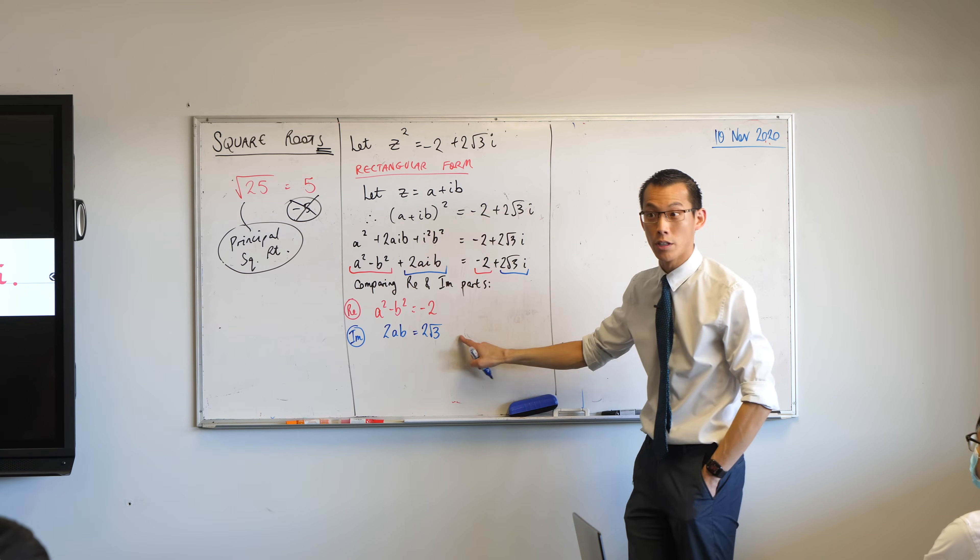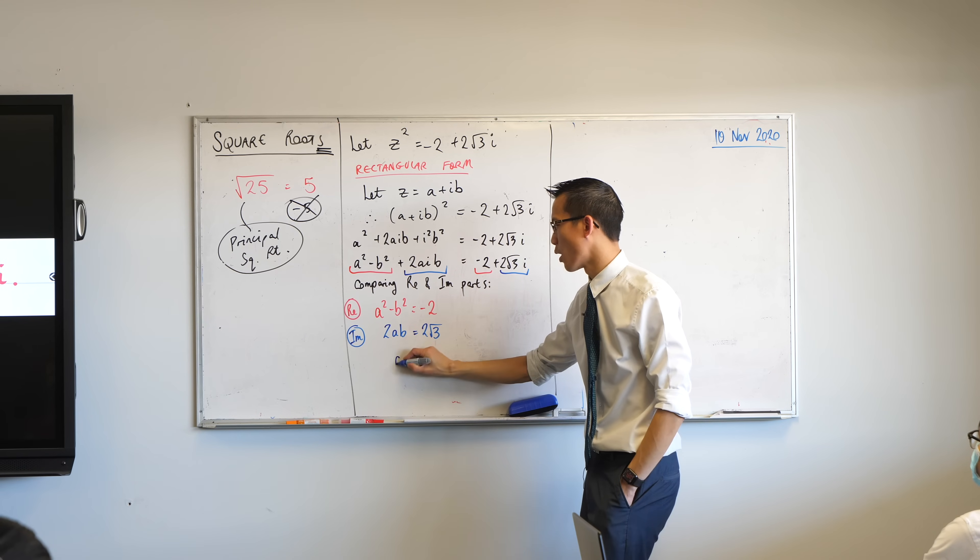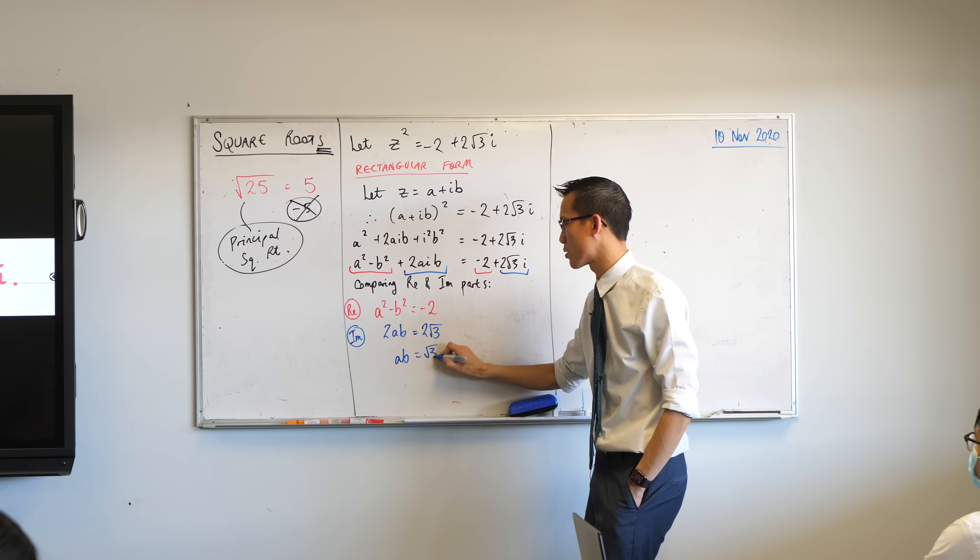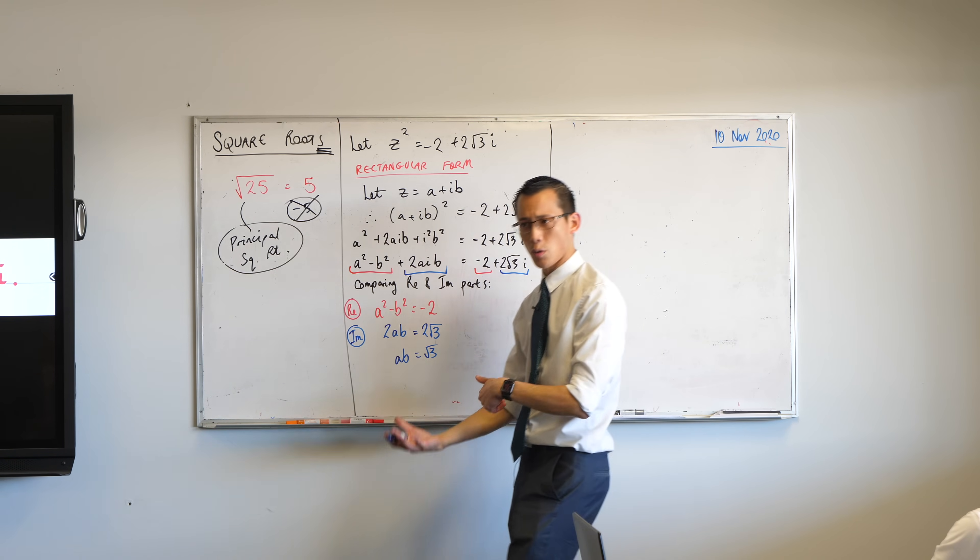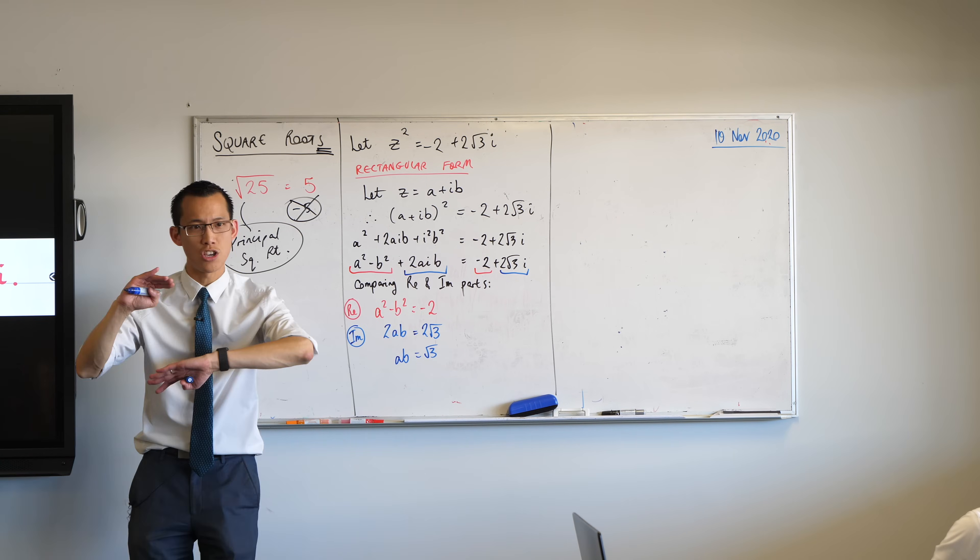When you get to this point, I hope you all wrote a line like this. Probably the most obvious thing to do is to divide both sides by two. But when we meet simultaneous equations, you generally have two paths you can go through.